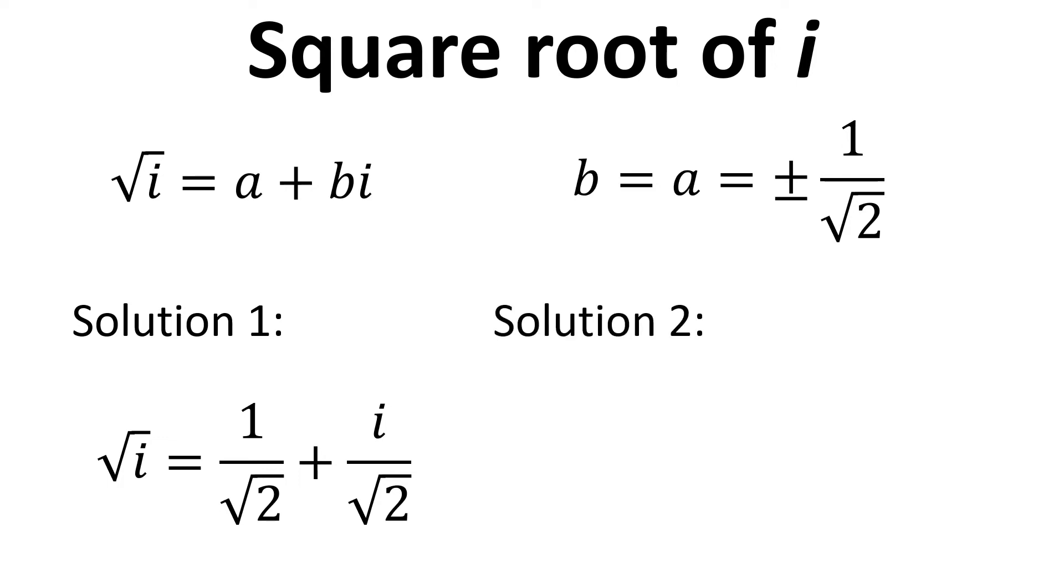Second solution is where a is negative 1 over root 2 and that means that b will also be negative 1 over root 2 and that gives us square root of i equals minus 1 over root 2 minus i over root 2.